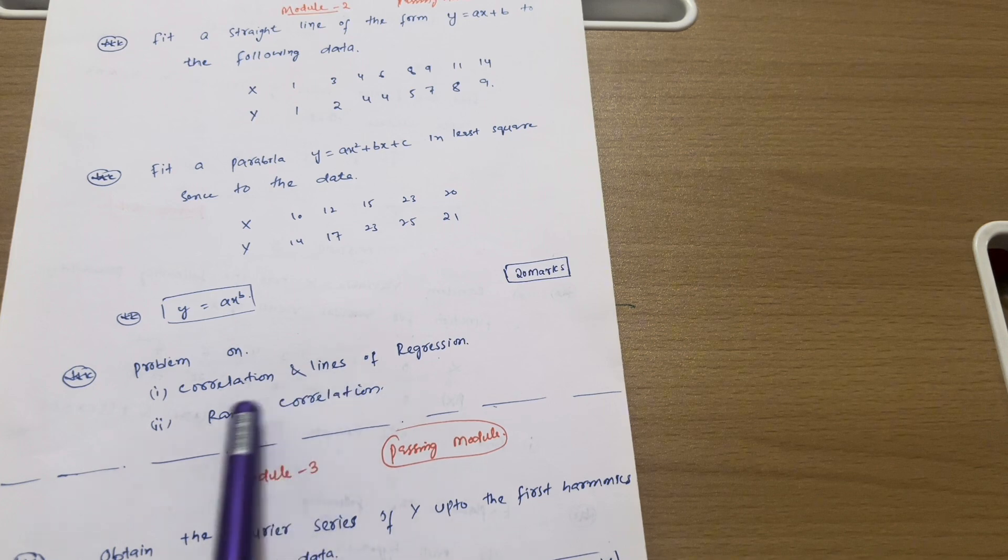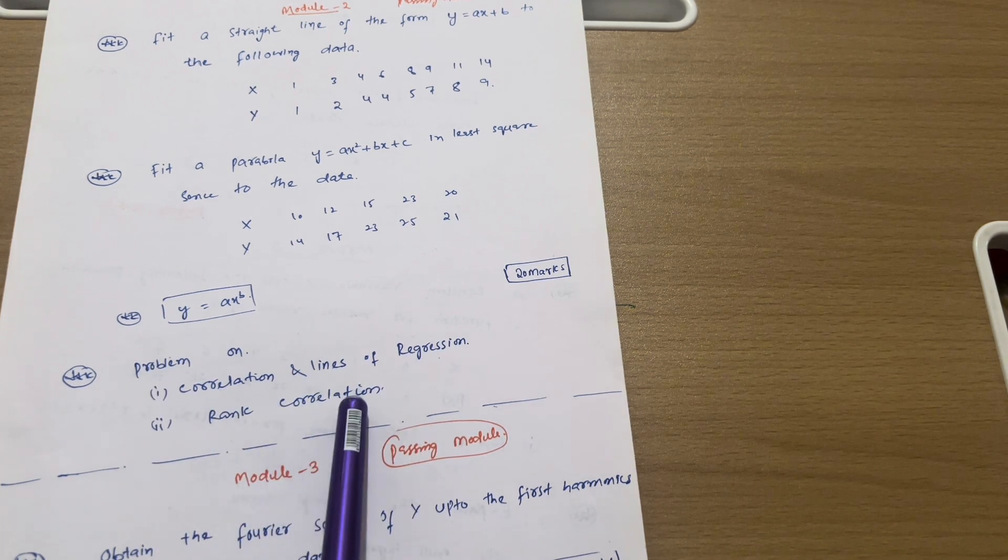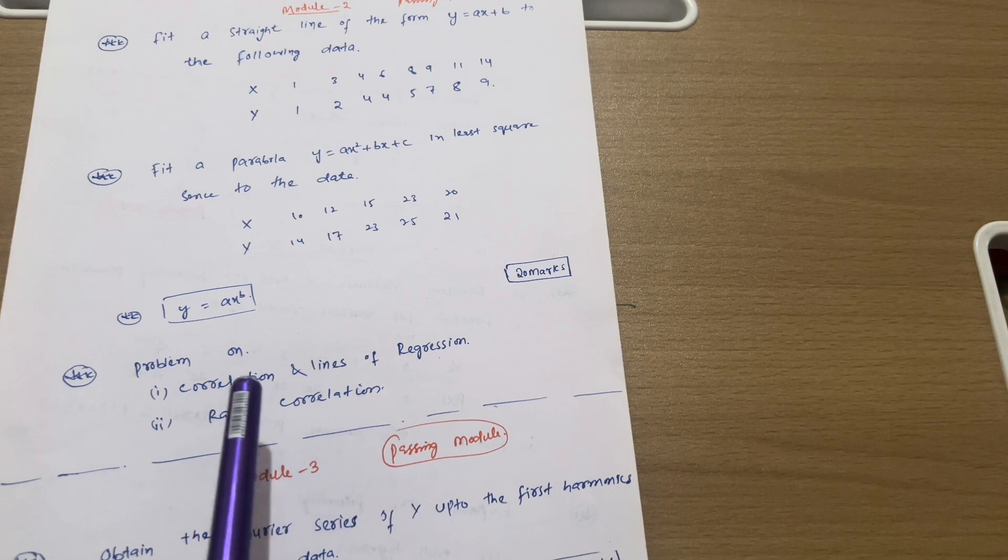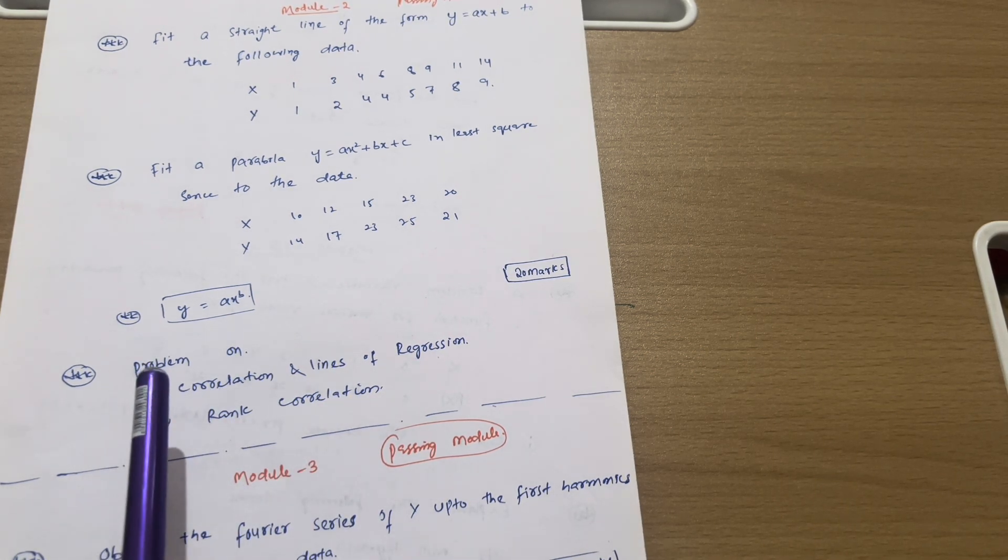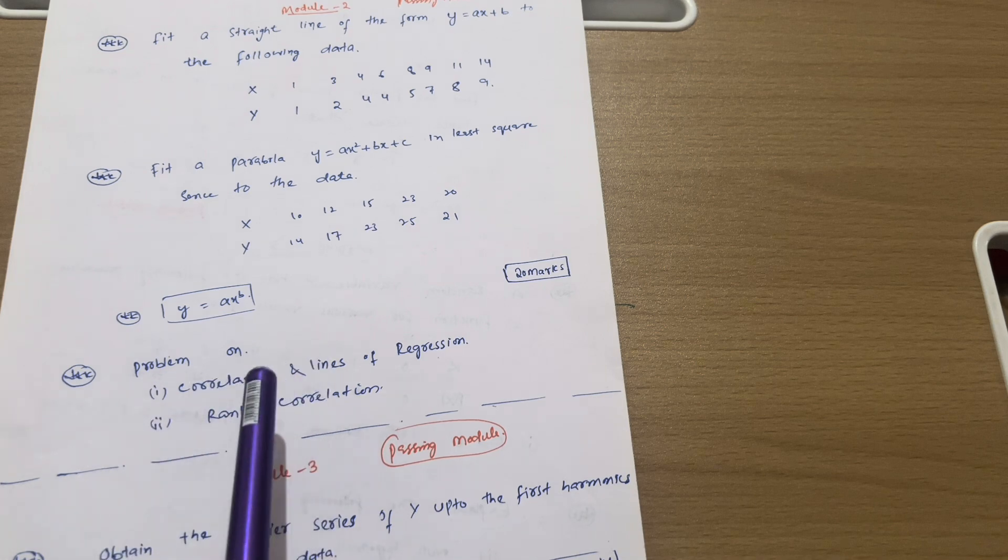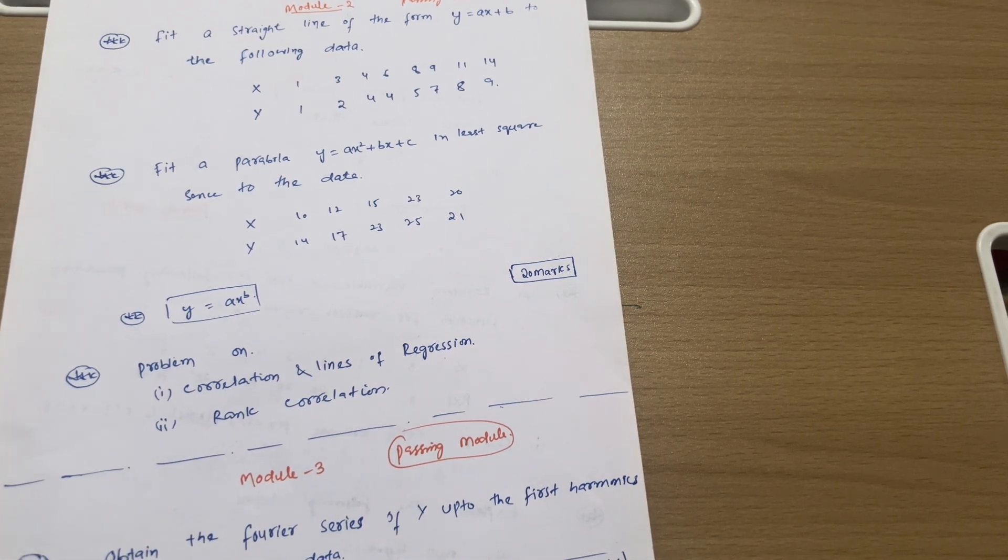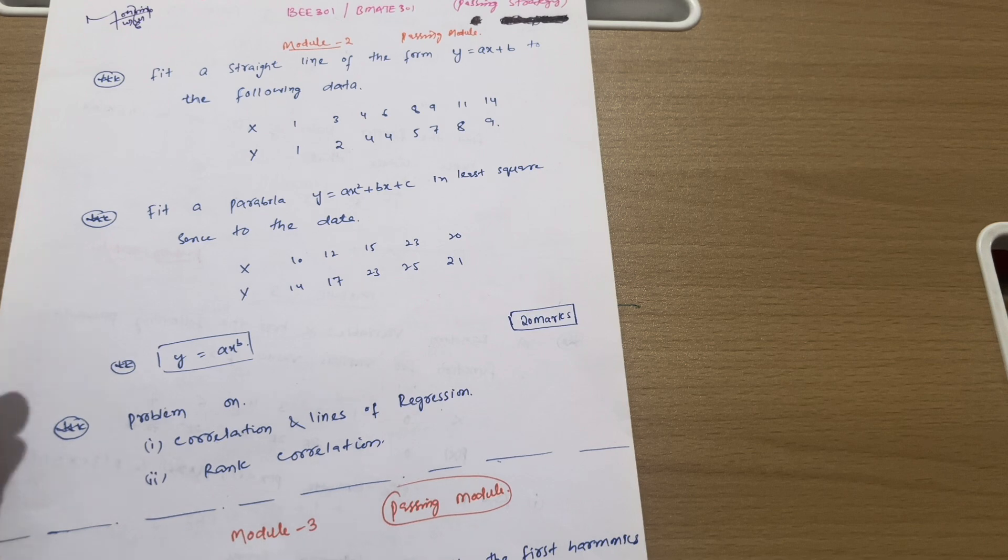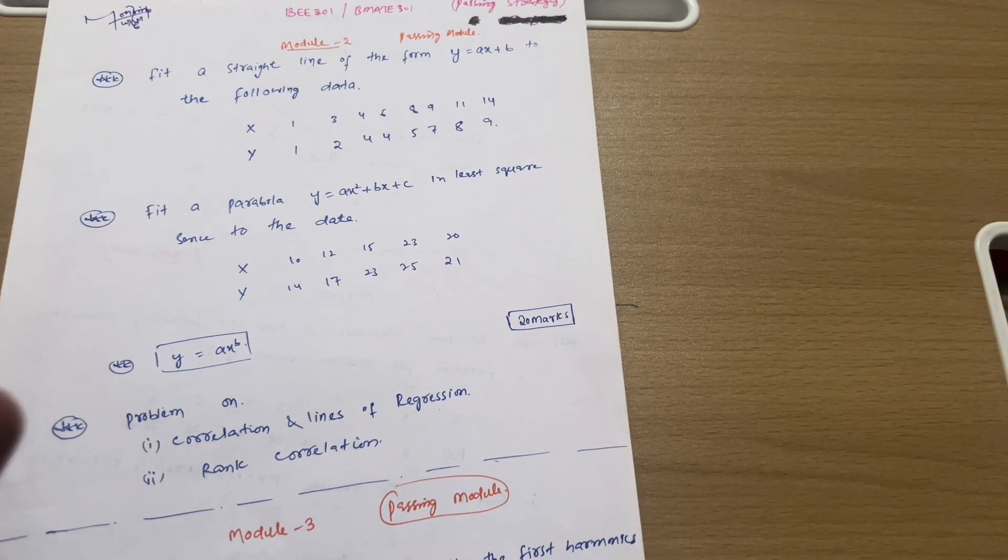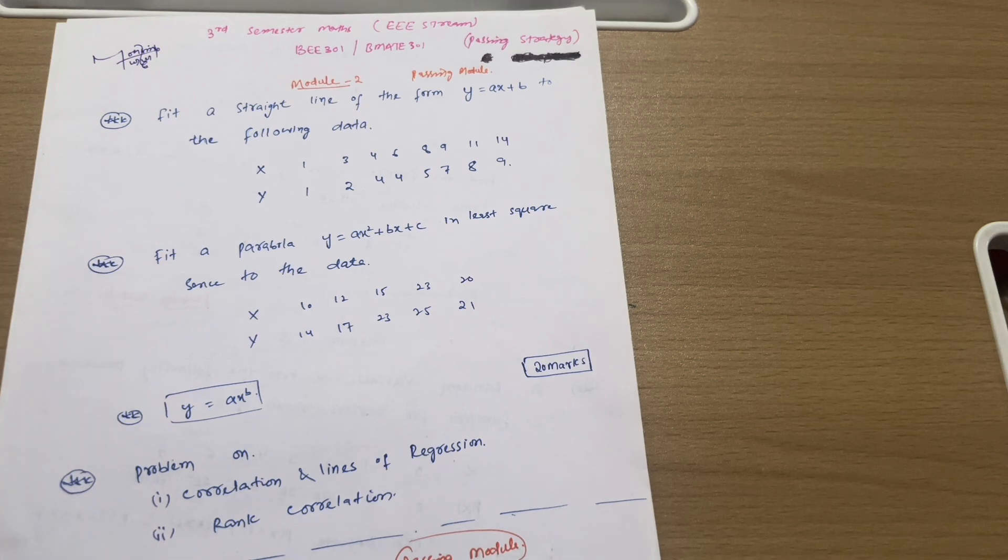Next we have simple problems again: problems on correlation and lines of regression and rank correlation. Why I have not written the important questions? As I earlier mentioned, data will be somehow changed, concept will be same. So that is why I have not written the important question. Writing the questions makes no sense. This is the passing module and you have to complete these five topics so that you can get 20 marks with ease. These 20 marks are just in your pocket. Don't show any kind of lenience in module second, that is the passing module.